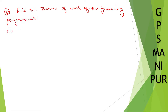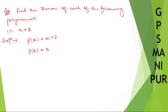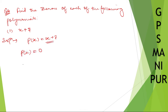Roman number one: p(x) = x + 7. To find the zero, we set p(x) equal to zero. So x + 7 = 0, which gives x = -7.